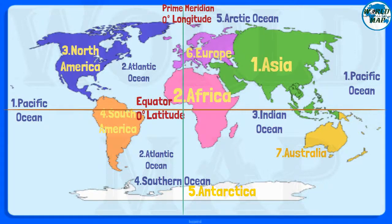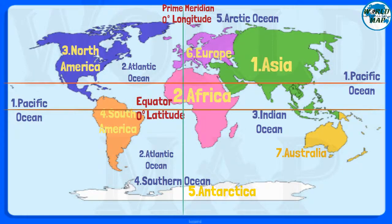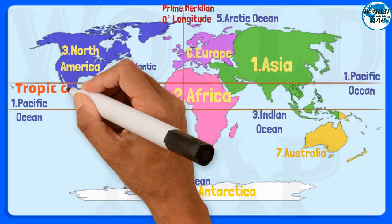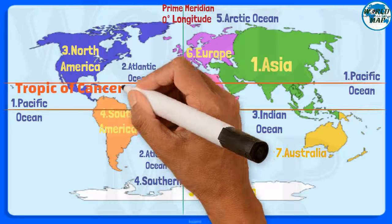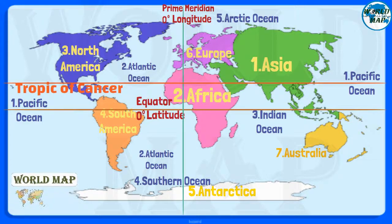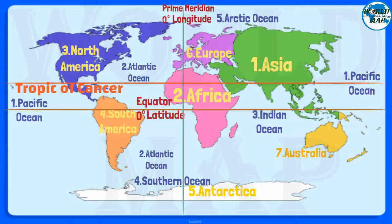The Tropic of Cancer, also known as the Northern Tropic, is the most northerly circle of latitude on Earth at which the Sun can be directly overhead. This occurs on the June solstice, when the northern hemisphere is tilted toward the Sun to its maximum extent.